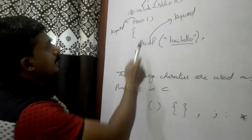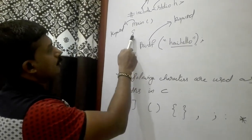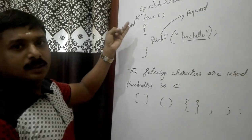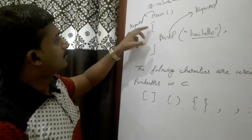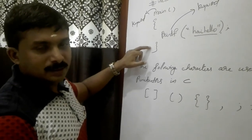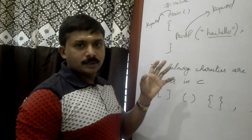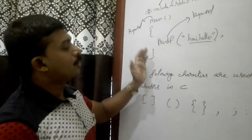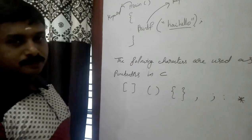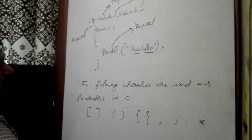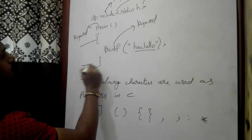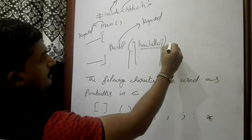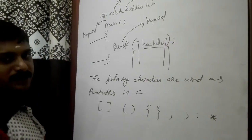The flower braces (curly braces) represent opening and closing. These relate to keywords, identifiers, and constants. Open parentheses and closing parentheses are punctuators. The semicolon is a statement terminator — we use it at the end of a statement.